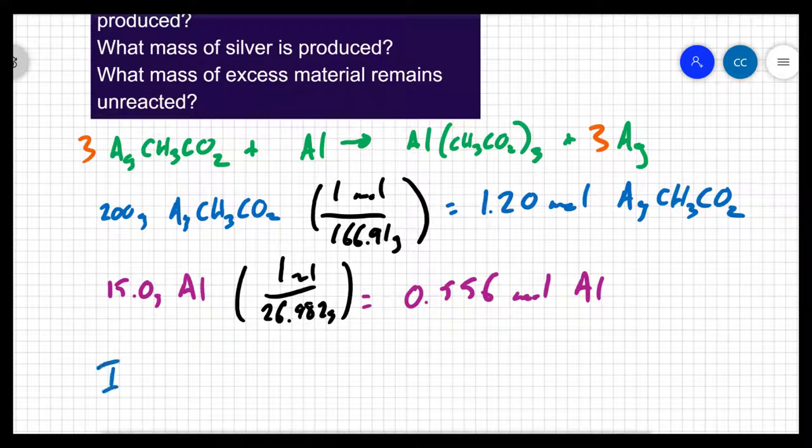That's how I figure out the limiting reactant. So I start out with an if I have. Let's just pick the silver acetate. I say if I have 1.2 moles of silver acetate, then how much of the aluminum will I need?